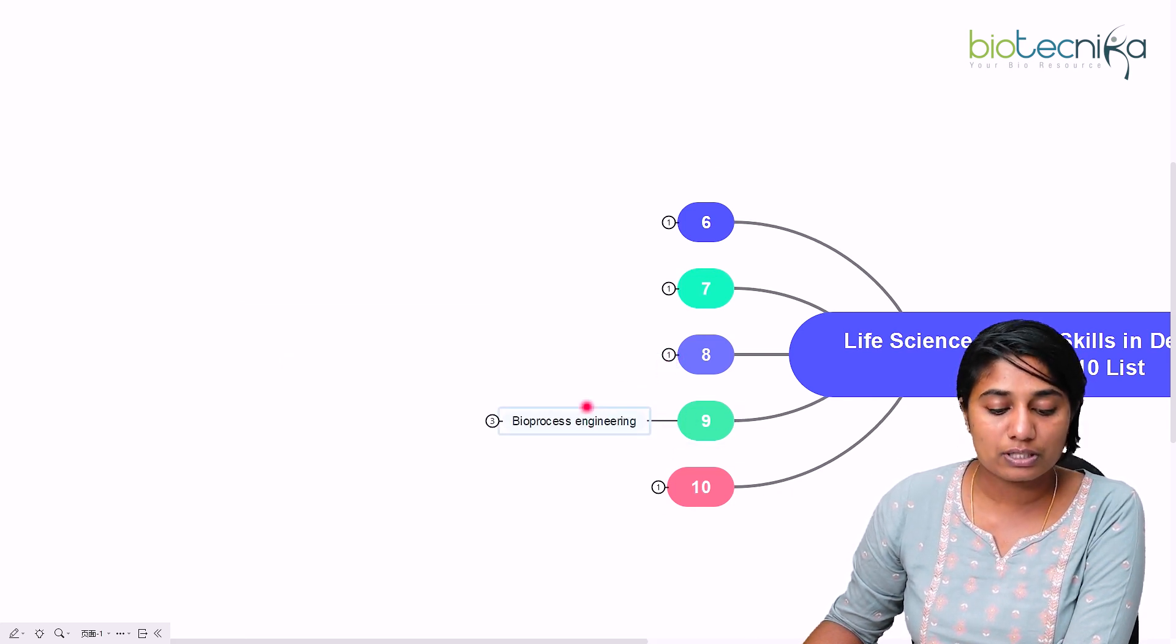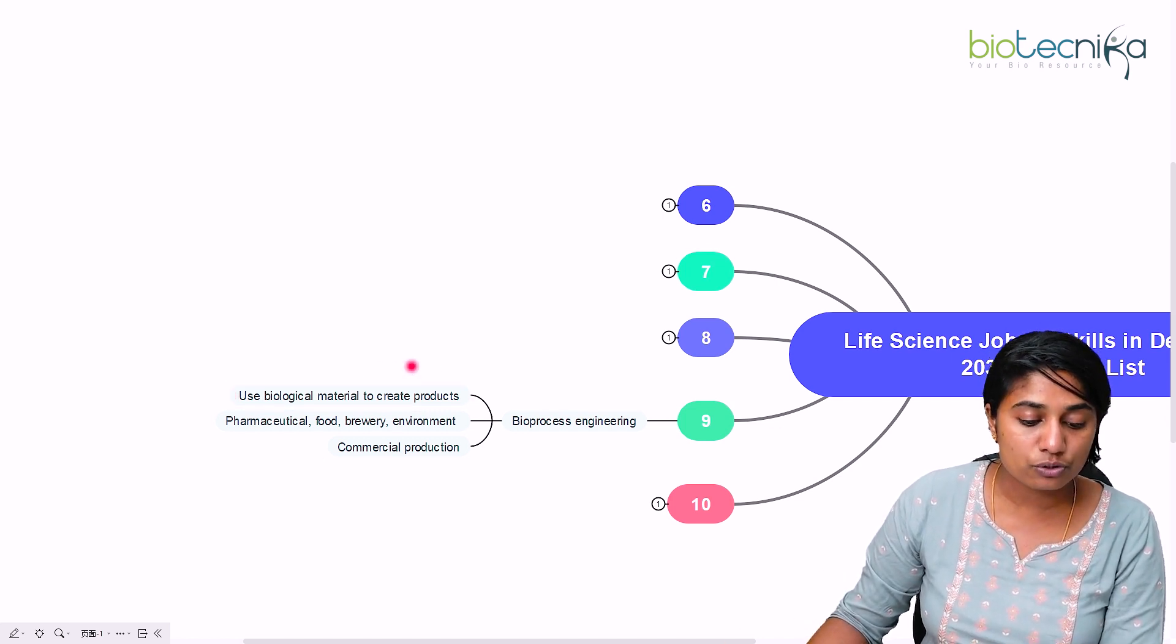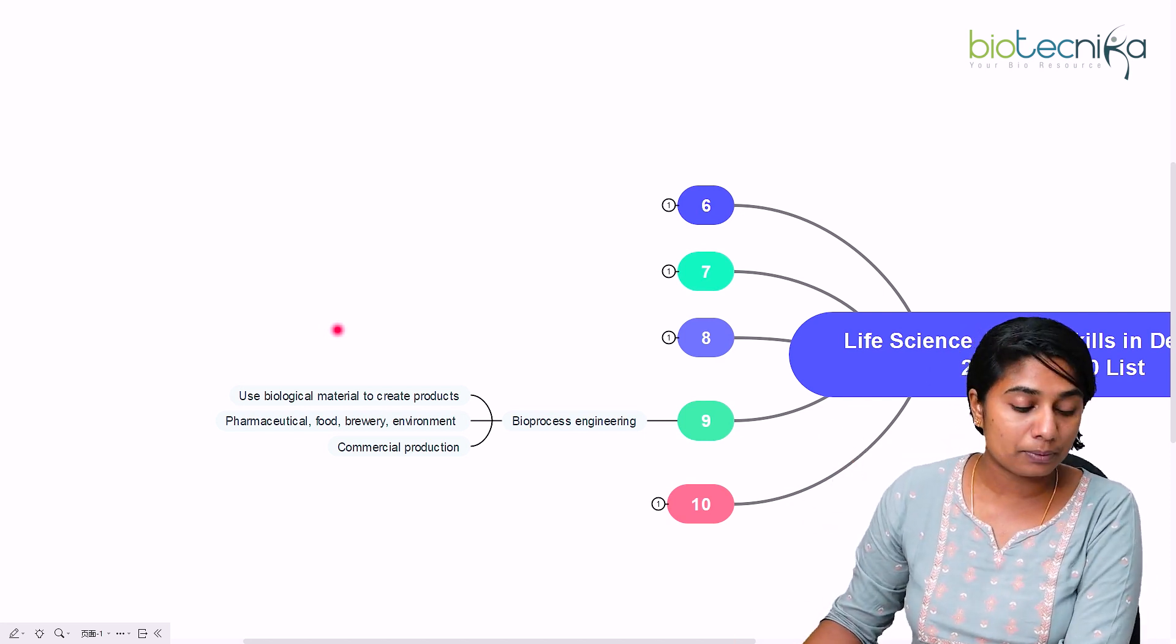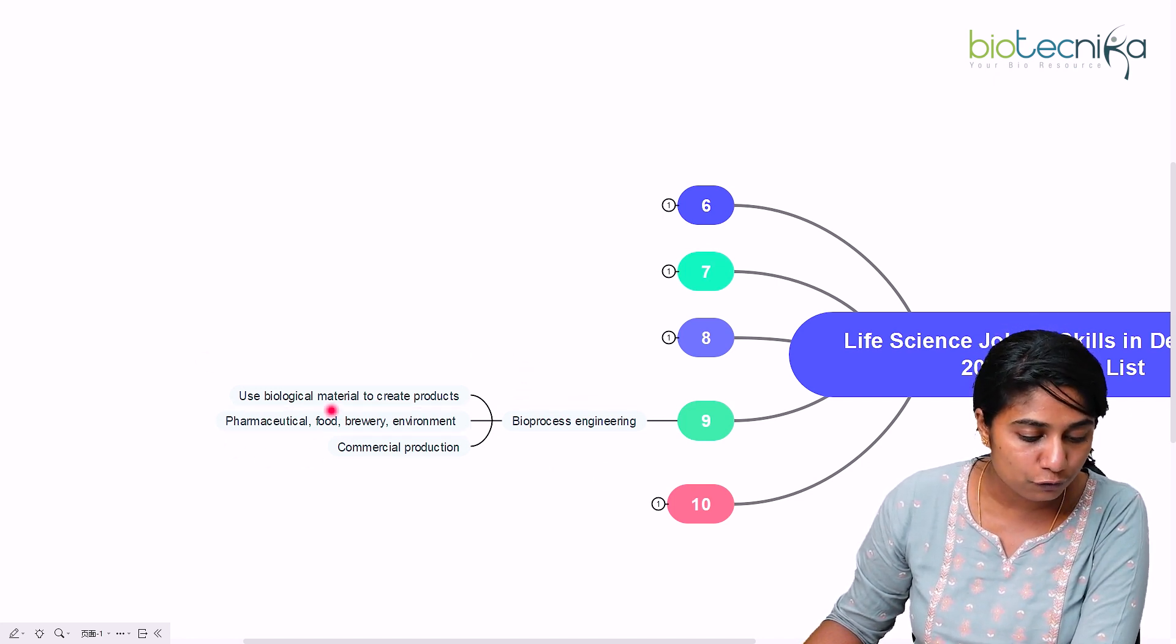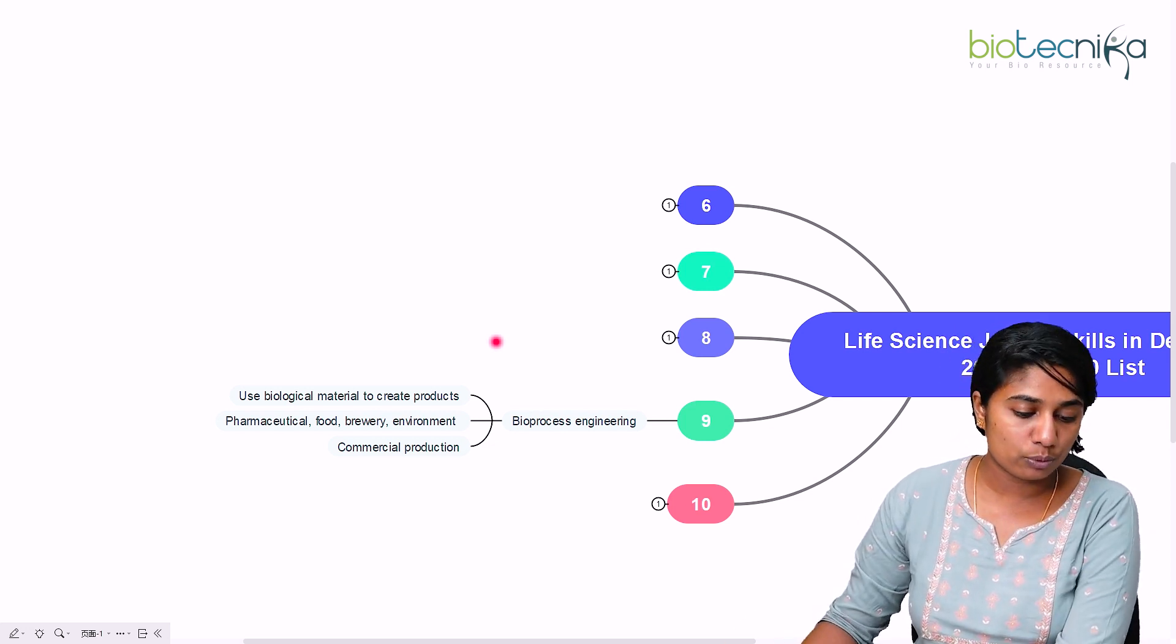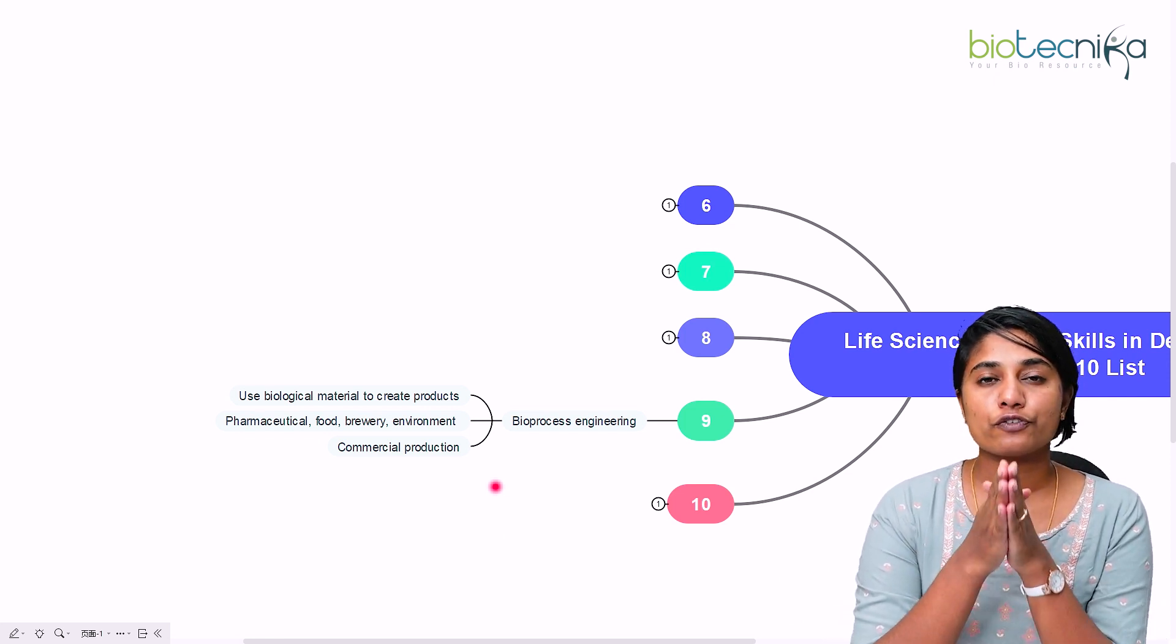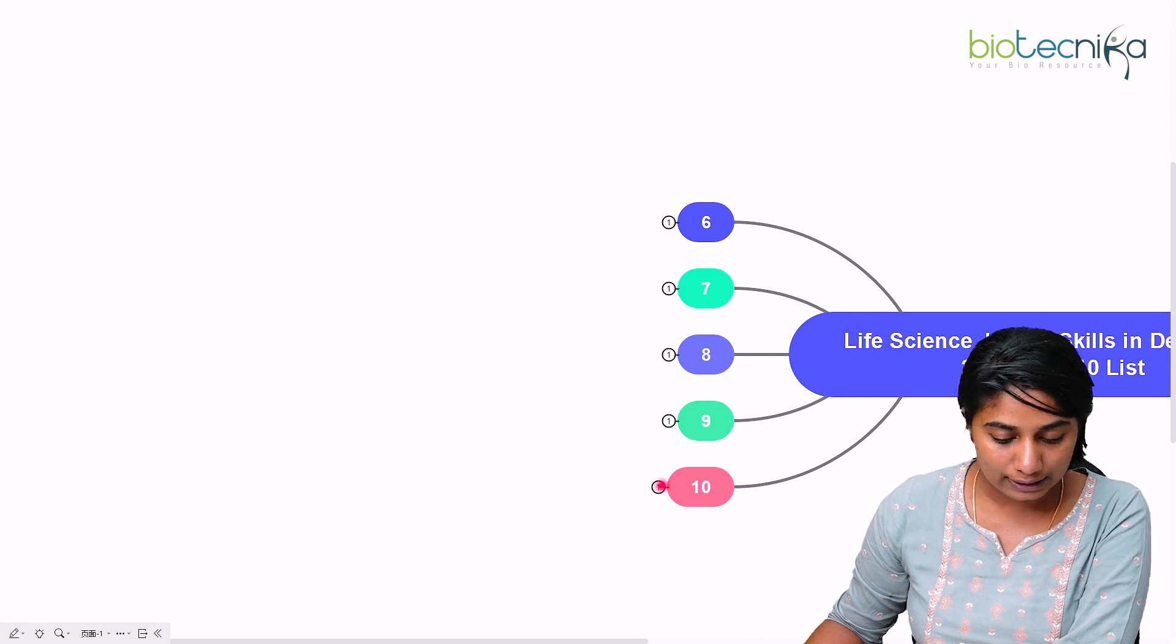The next field we're going to talk about is bioprocess engineering. Bioprocess engineering is the use of biological material to create commercial products. For example, you use microbes and a substrate to produce a product and that product can be commercially viable. That is the use of bioprocess engineering in industries. It can be used in pharmaceutical industry, food, brewery industry, or even for the environment, for example for sewage treatment or production of biofuels. Most bioprocess engineering principles are used in commercial production in the industrial scale. This is basically how to get your research from the lab to the industrial scale. So that is what a bioprocess scale-up would be.